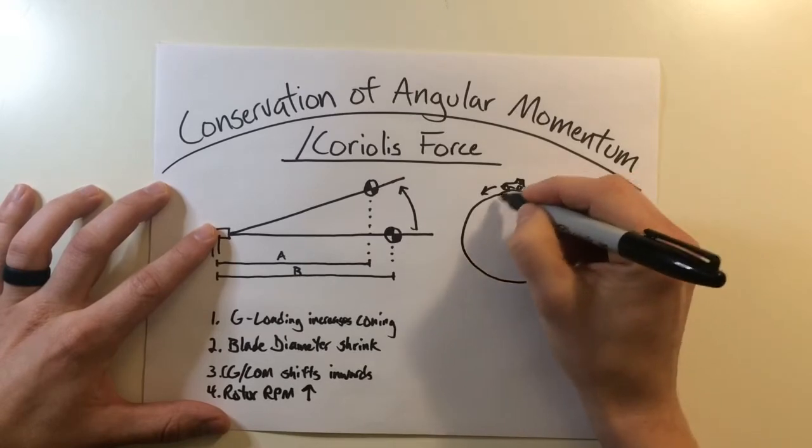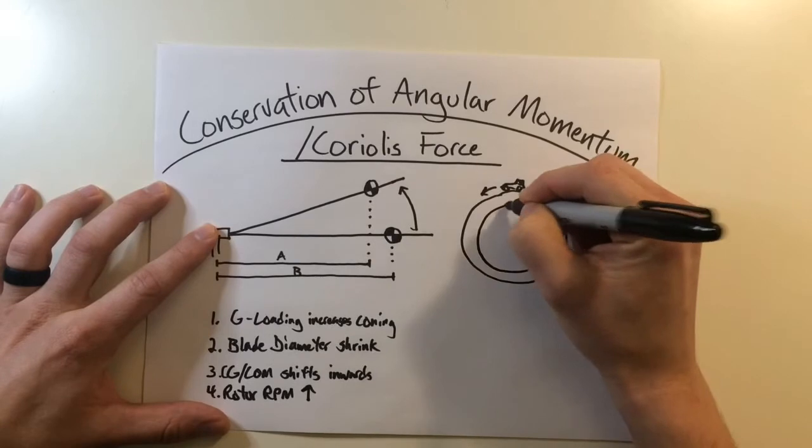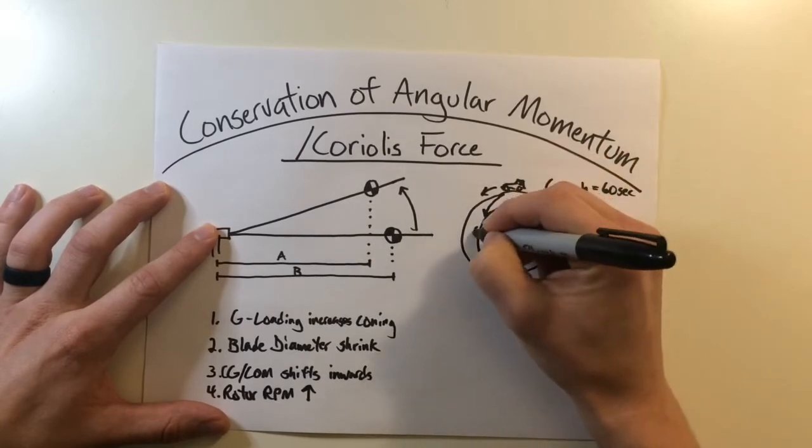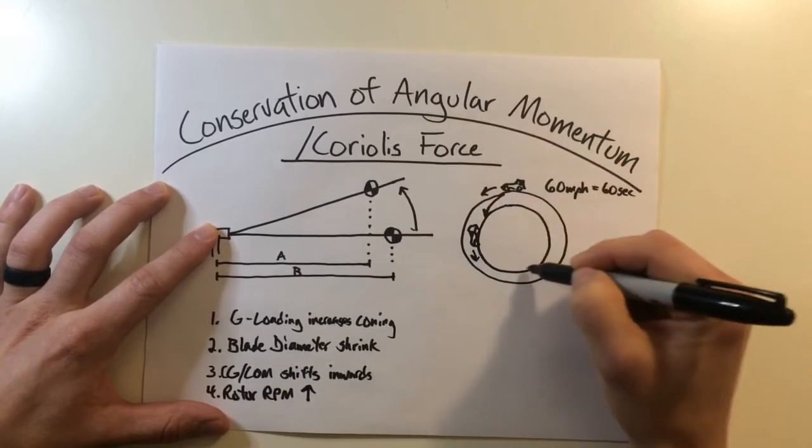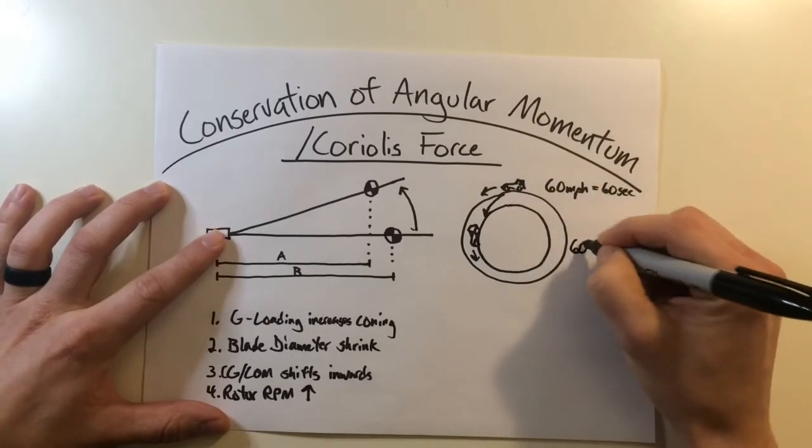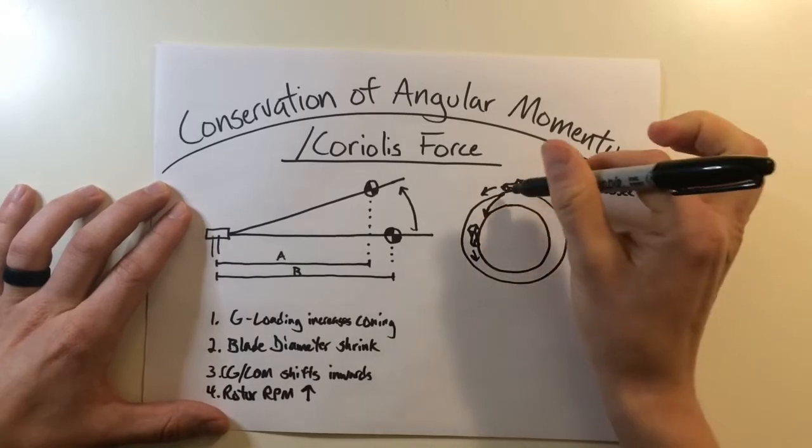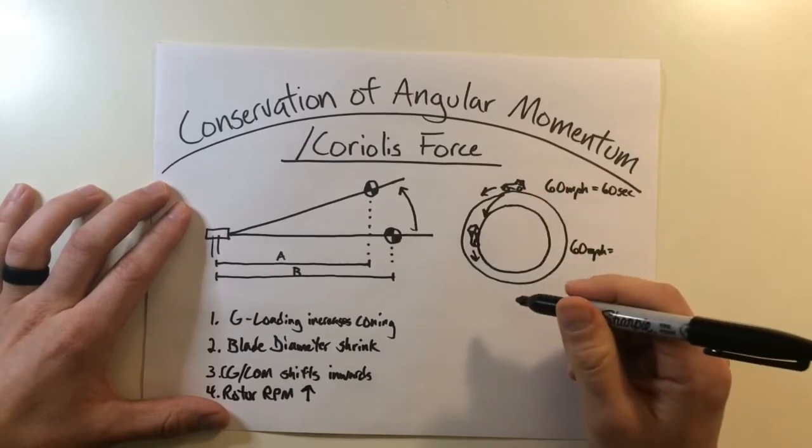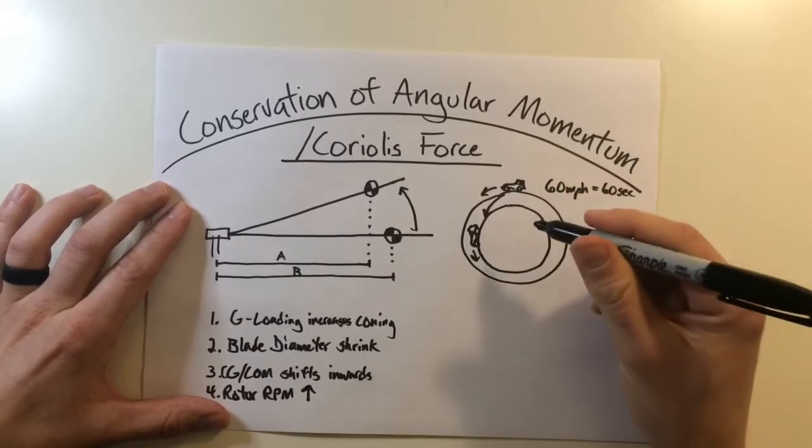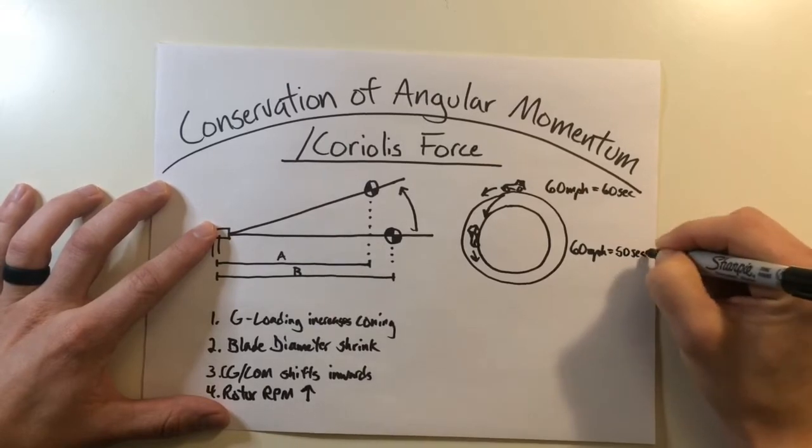Now if we were to have this race car driver cut inside to an inner loop in the track, let's say he transitions to here, and he's still maintaining the same 60 miles per hour. But now his diameter or his distance around the track is going to be shorter. But the momentum is remaining the same. So instead of one revolution in 60 seconds, maybe his revolution has now cut down to 50 seconds.